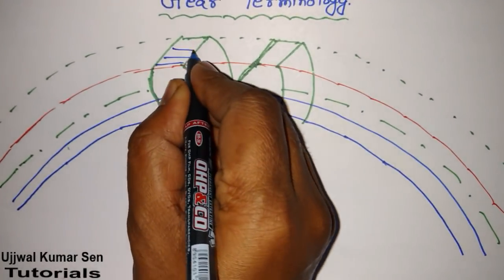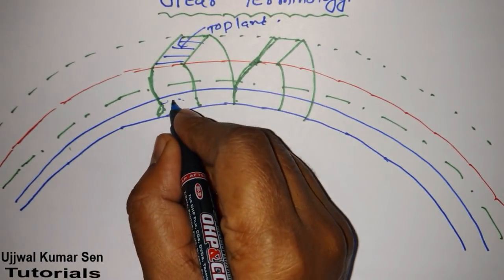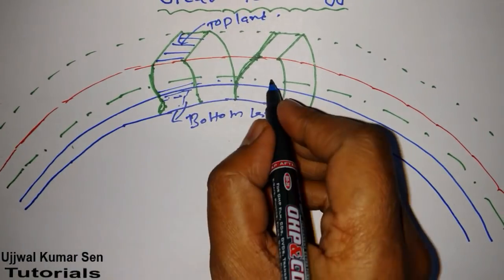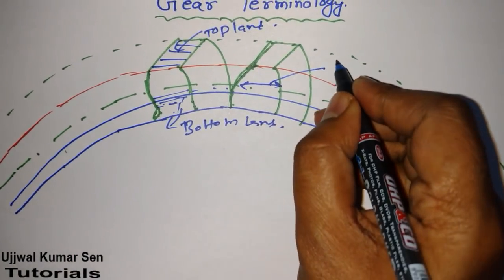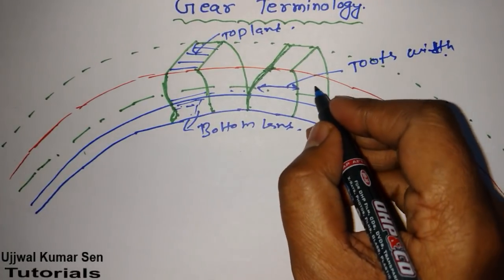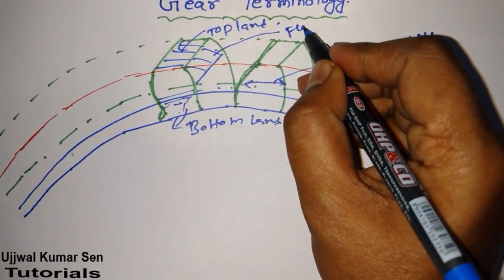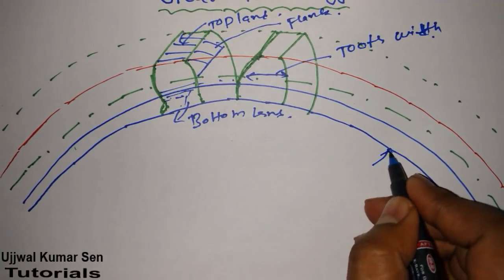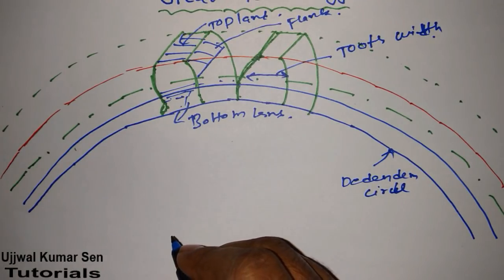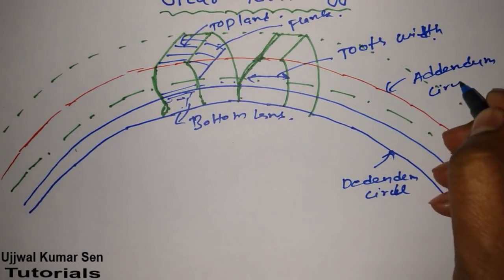First, this surface on top is known as top land. And this surface at the bottom, from here to here, is known as bottom land. From here to here across the tooth is known as tooth width. The slanted side surface of the tooth is known as flank. The below circle is known as dedendum circle — don't confuse dedendum with dedendum circle, they are different. And the outer circle is known as addendum circle. Remember that.